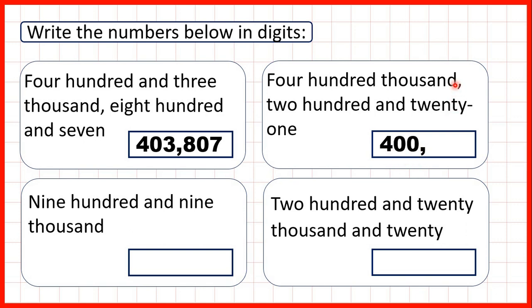Then we read the rest of our number after the word thousand. We have 221, so we write that after the comma.